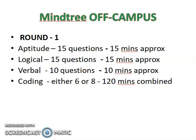In round one there will be four sections: aptitude, logical reasoning, verbal, and coding. In aptitude you will have 15 questions and 15 minutes to solve them. In logical reasoning you will get 15 questions and 15 minutes. In verbal ability you will get 10 questions and 10 minutes. In coding you will get 6 or 8 questions — I'm not entirely sure — and you will get 120 minutes to solve the coding questions.